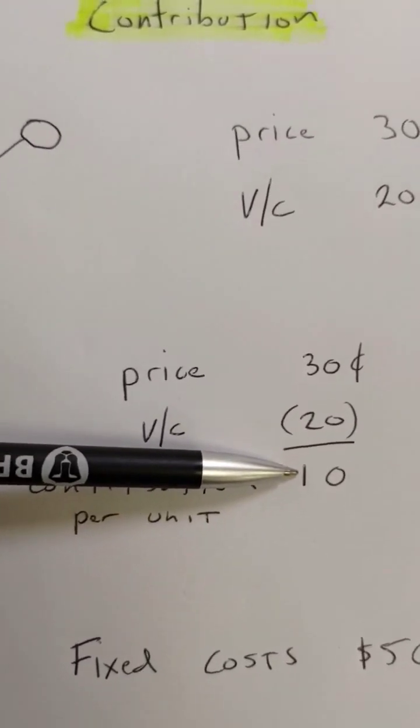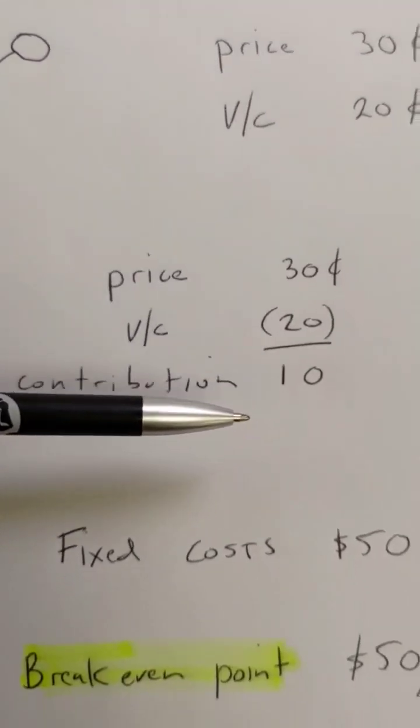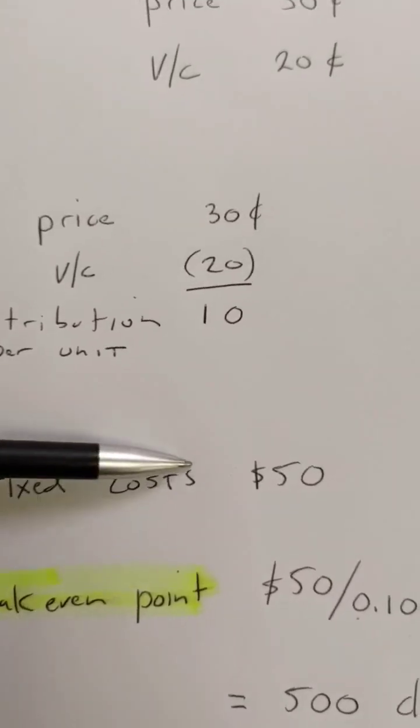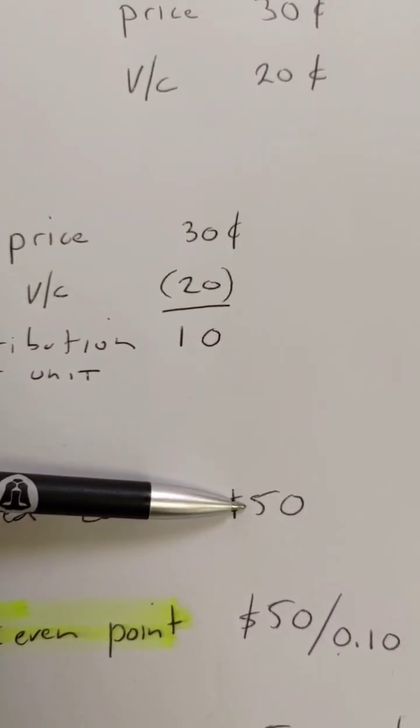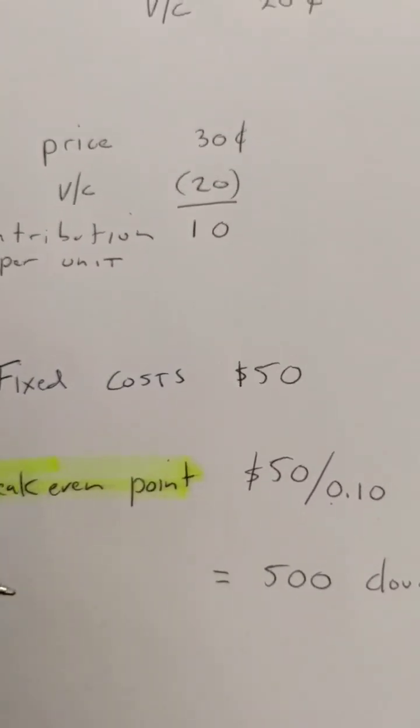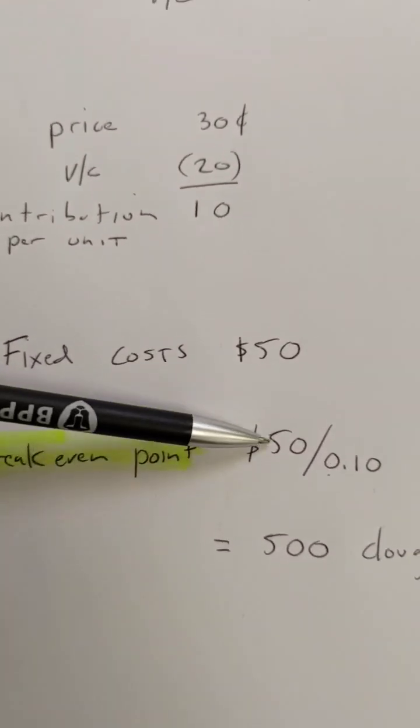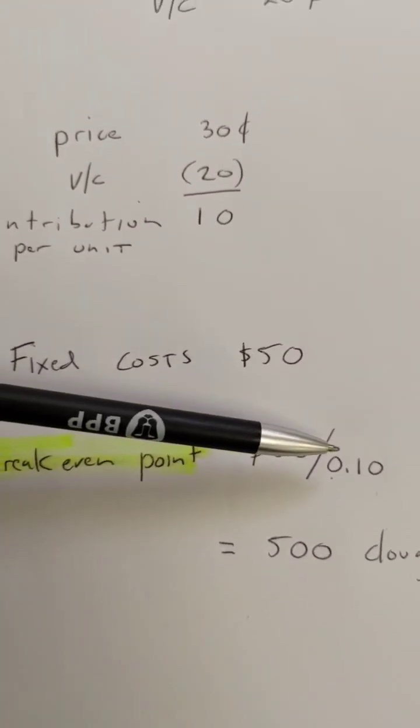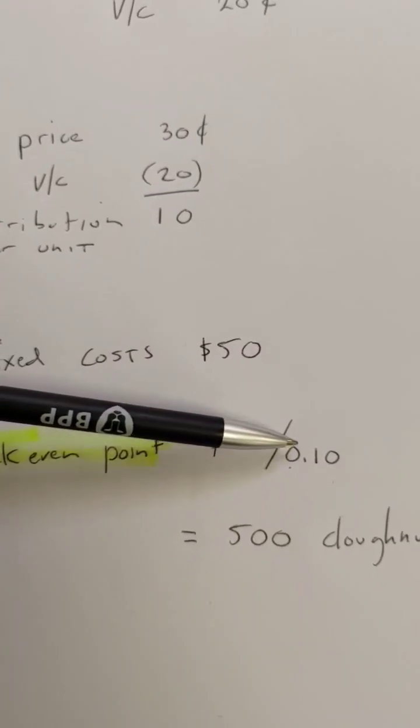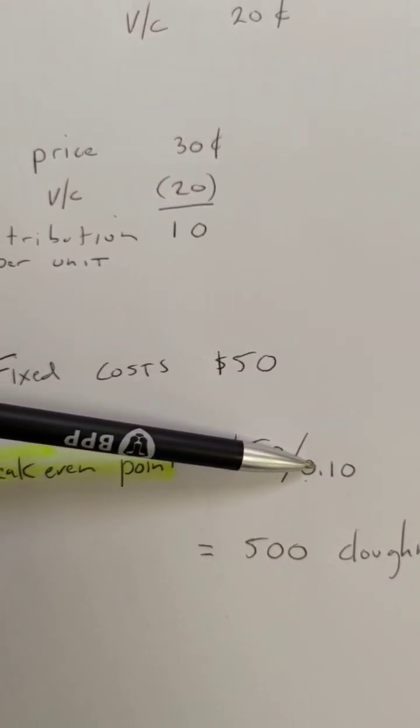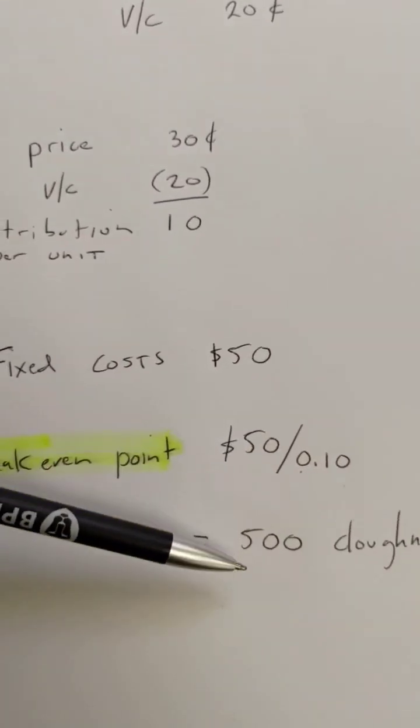my fixed costs and my profit. So if my fixed costs, my rent, is $50 per month, break-even point equals fixed costs divided by the contribution per unit. How many doughnuts do I need to sell to cover my fixed costs?